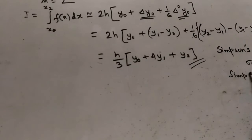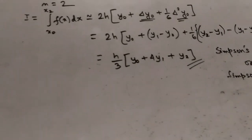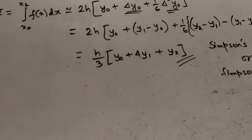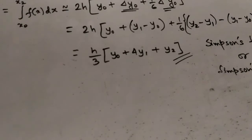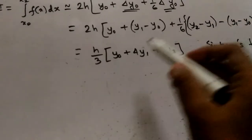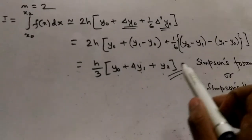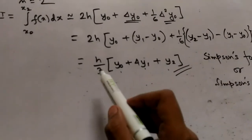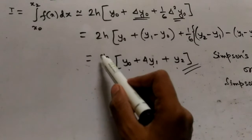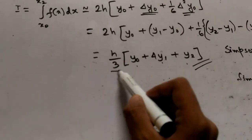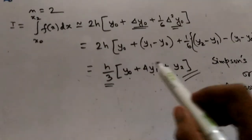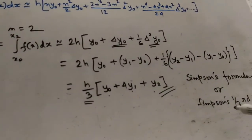Or Simpson's one-third rule for three points y0, y1, and y2. Now why is it called one-third rule? Since the coefficient of h here is 1/3, that is why the formula is also known as Simpson's one-third rule.